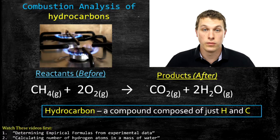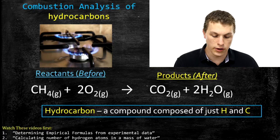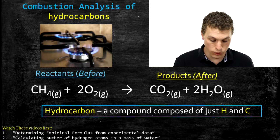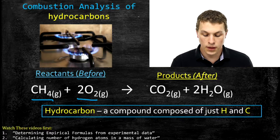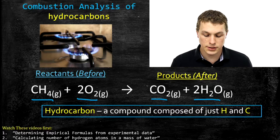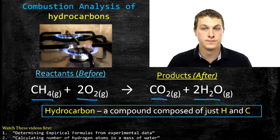Our goal is to figure out the empirical formula of a hydrocarbon. Hydrocarbons are just any molecules with carbon and hydrogen. One example would be methane, which we see down here. If you combine methane or any other hydrocarbon with oxygen, what you get out is CO2 and water. Based on the amount of CO2 or water that comes out, you can figure out what the empirical formula was of the hydrocarbon you put in.